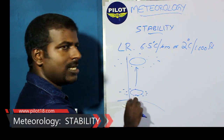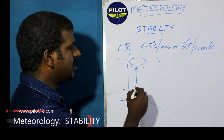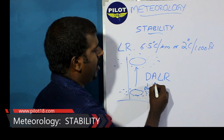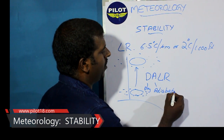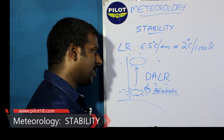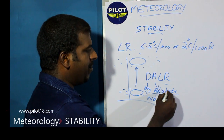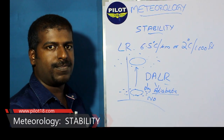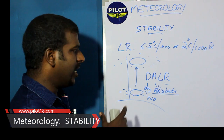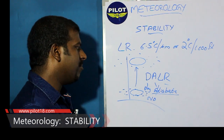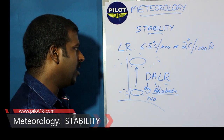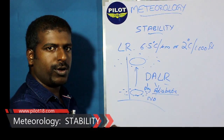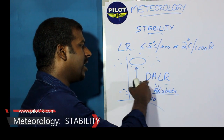Suppose this parcel is a parcel of dry air. Then this loss of temperature is called DALR — dry adiabatic lapse rate. Why is it called adiabatic? 'Adia' means no, 'diabatic' means heat entering or leaving. So heat is not allowed to enter or leave the system — that is adiabatic. In a diabatic process, heat is allowed to enter or leave, but in an adiabatic process it is not.